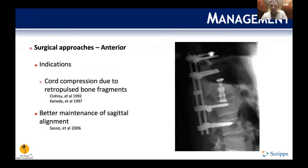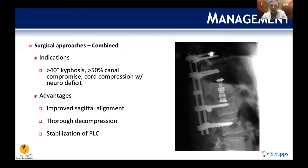The main indication for an anterior portion of the construct is cord compression from retropulsed bony fragments on the anterior part of the canal that you can't typically reach from posterior. An anterior approach also allows better sagittal alignment.